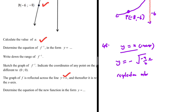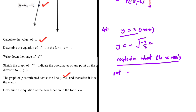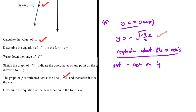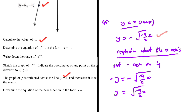Reflection about the x axis means we put a minus sign on y. So minus y equals minus the square root of (minus 9 over 2 times x). To make y the subject, we divide both sides by minus 1, giving y equals the square root of (minus 9 over 2 times x). Note that x is inside the square root, not outside. That is the final equation for 4.5.